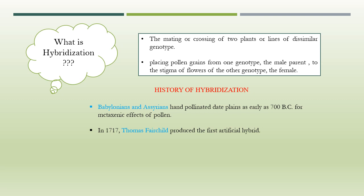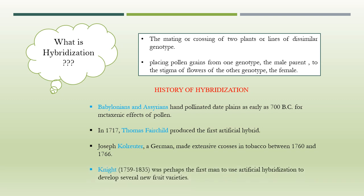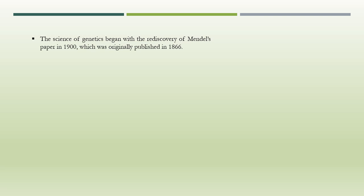Subsequently, many scientists used hybridization for scientific studies as well as crop improvement. Notable among them are Kohlreuter, who made many crosses in tobacco during 1760 to 1766 and emphasized hybrid vigor in F1, and Knight, who developed several varieties of apples, pears, peaches, grapes, and currants during 1759 to 1835. Many other scientists like Goss, Sargritt, Gertner, and Nodden noted uniformity in F1, dominance in F1, and segregation and appearance of parental types in F2.